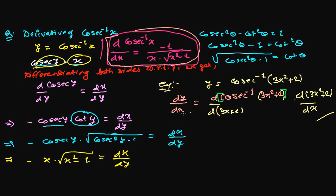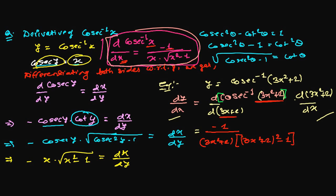We're differentiating both sides with respect to x. The derivative of cosecant inverse with respect to its angle is minus 1 over the angle times the square root of the angle squared minus 1. So here the angle is 3x squared plus 2, giving us minus 1 over 3x squared plus 2 times the square root of 3x squared plus 2 whole squared minus 1.